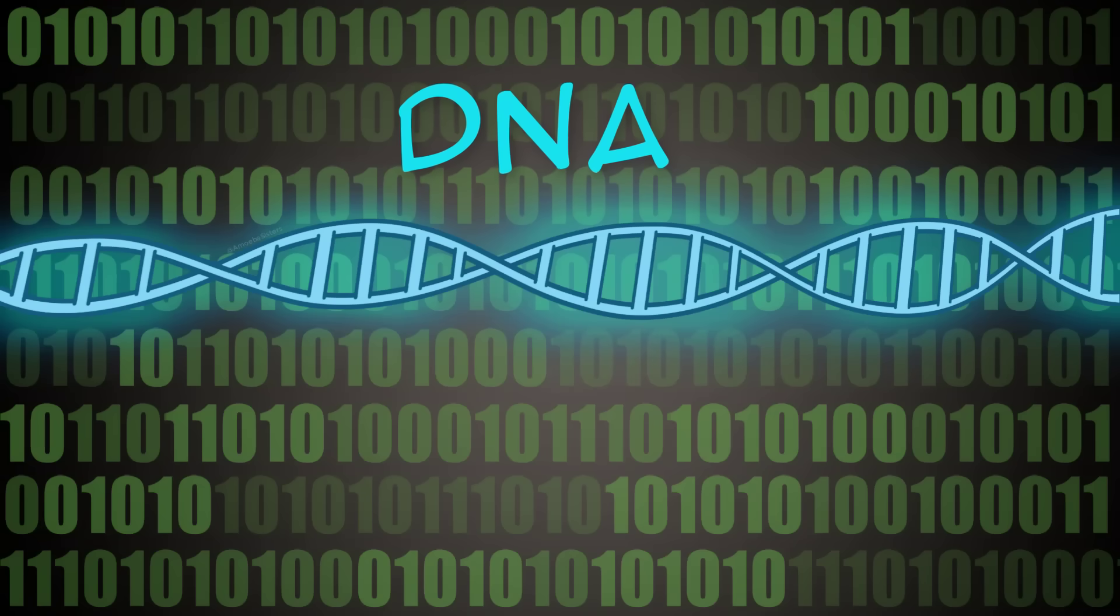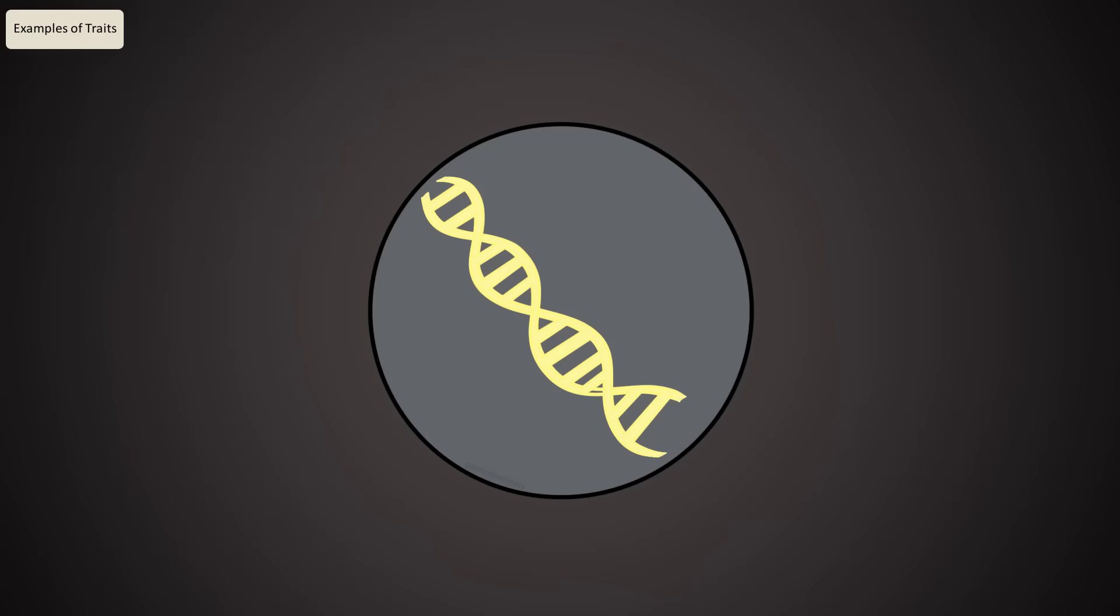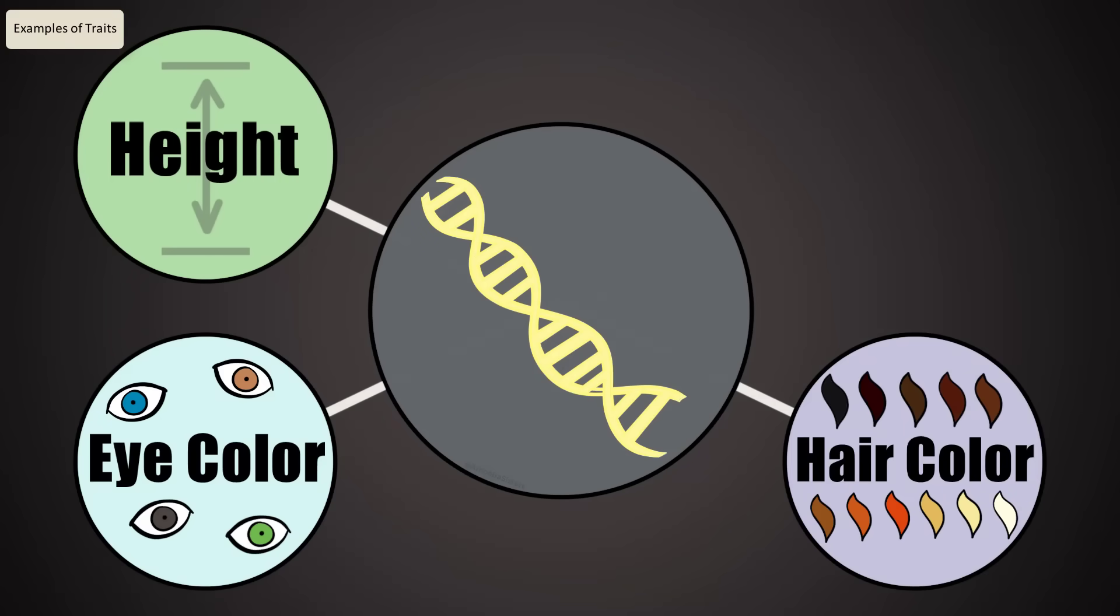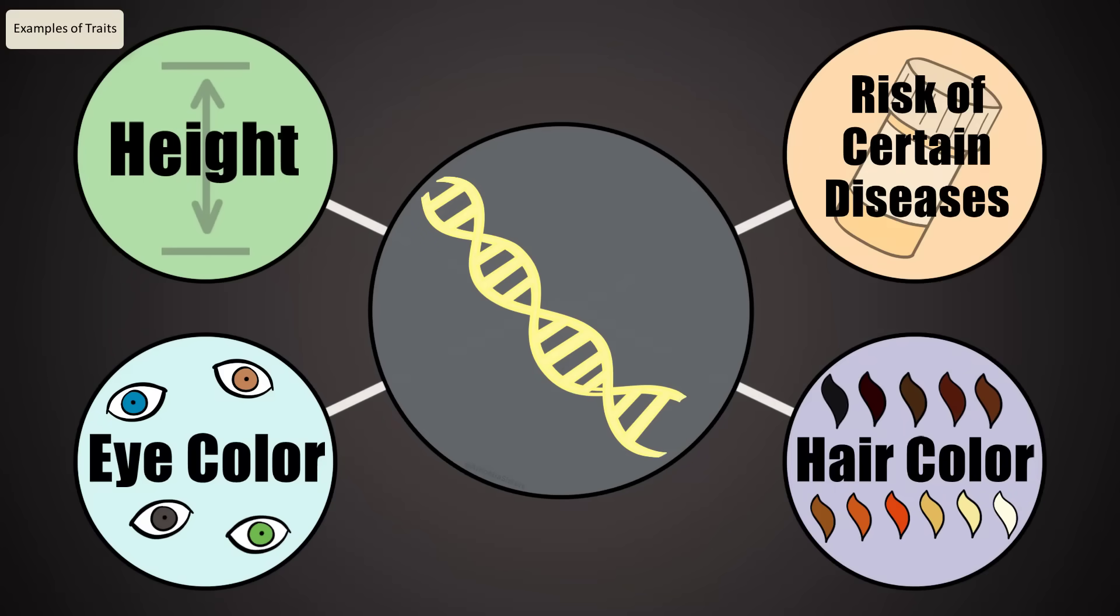Just like Spike, your DNA codes for your traits. And your cells can't function without it. DNA determines how tall you are, what color your eyes are, what color your hair is, or even if you're at risk for certain diseases.